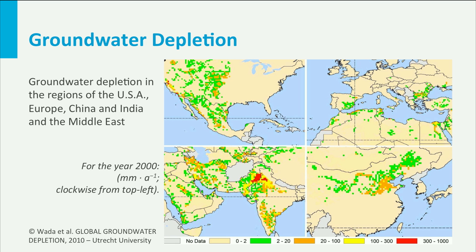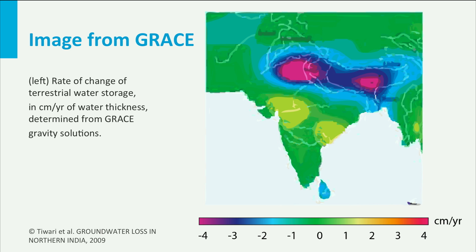This map from a famous article by Wada et al. from Utrecht University shows global groundwater depletion. The Arabian Peninsula, Iran, the North China Plains, and especially the Indo-Gangetic Plains stand out. The Indo-Gangetic Plains run through Pakistan, India, and Bangladesh and are home to 600 million people. Groundwater extraction due to irrigation here is so large that it changes the gravitational field of the earth in such a way that it can be measured from space by the GRACE satellite. This image from an article by Tiwari et al. shows a decline of about 40 millimeters per year over this huge area.